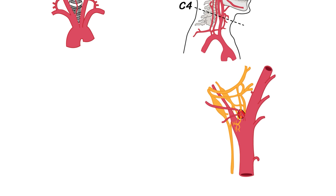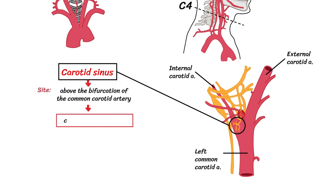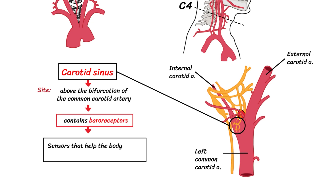Just above the bifurcation of the common carotid artery, there is an area called the carotid sinus, where the common carotid and internal carotid are slightly dilated. This is an important area as it contains baroreceptors, which are sensors that help the body detect and regulate blood pressure.